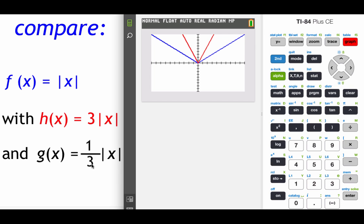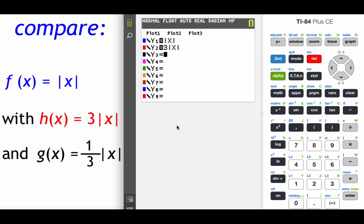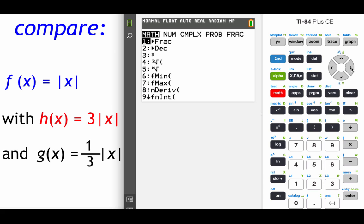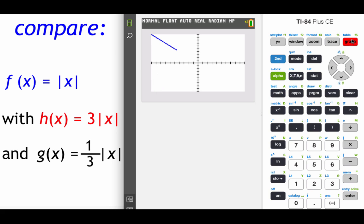Now if we graph this next one out, one-third absolute value of x, it might be helpful to throw that one-third stuff inside of parentheses. So parentheses one divided by three, and then do your absolute value of x. Graphing this one out, we can see that since we were multiplying our absolute value of x by some c value that was a fraction, a third, our graph was vertically shrunk. So we flattened this thing out a little bit.